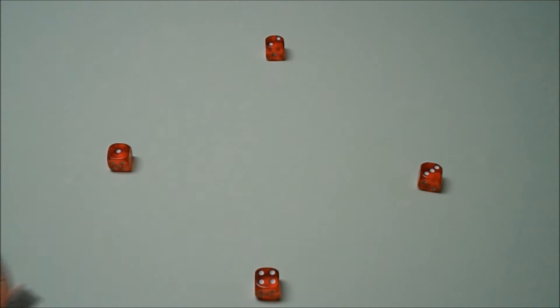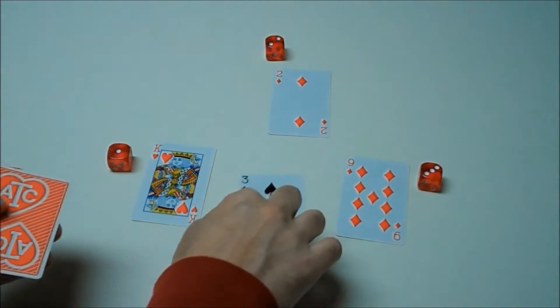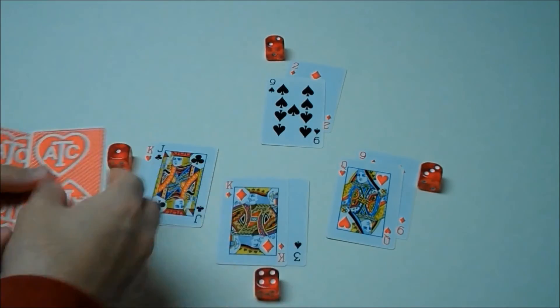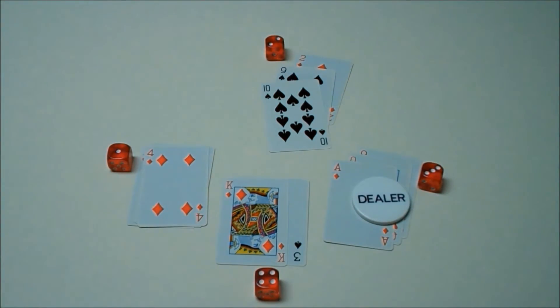Imagine we have a poker game between four players: 1, 2, 3, and 4. We'll deal out cards from the deck until we see the first ace. This person will be the dealer.